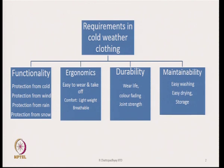Protection from cold is the primary requirement because it is winter, followed by protection from wind, since if somebody moves outside their residence, the wind may be blowing. The other requirements are protection from rain, because there is a possibility of rain in winter, and protection from snow wherever it is snowing. These are mainly the functionality point of view requirements.